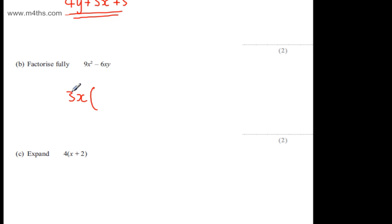I can think to myself, what do I need to multiply 3x to get 9x²? Or I could say, what's 9x² divided by 3x? I know that I need to multiply 3x by 3x to get 9x². I know that I need to multiply 3x by -2 to get -6xy. So we'll have now 3x multiplied by 3x - 2y. And that's our two marks.